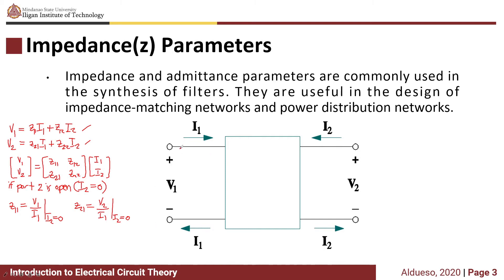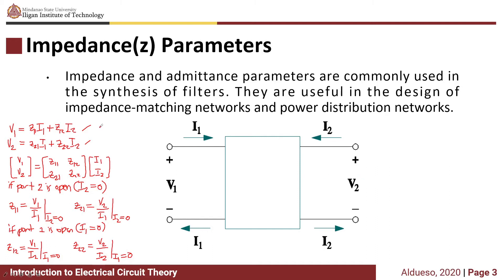If we open port 1 and apply a voltage or current source to port 2, meaning I1 = 0, then Z22 = V2/I2 when I1 = 0, and Z12 = V1/I2 when I1 = 0. From these equations, we can construct an equivalent circuit for the Z parameters.